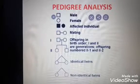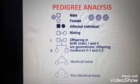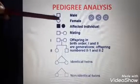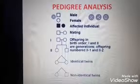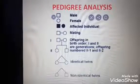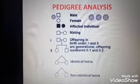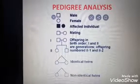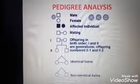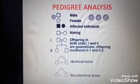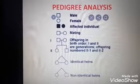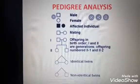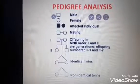In pedigree analysis, there are some symbols to analyze heredity. A square means male and a circle means female. If both the square and circle are shaded completely, that means they are affected — meaning they have the trait being analyzed.